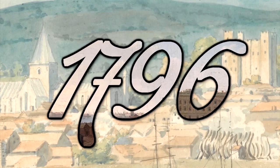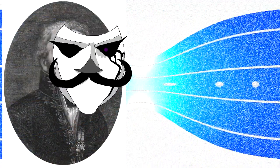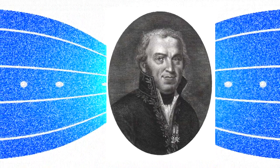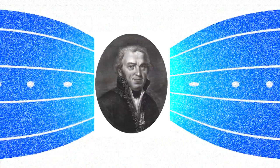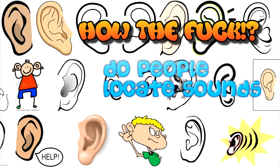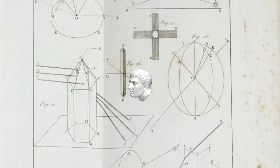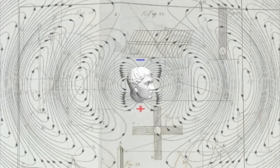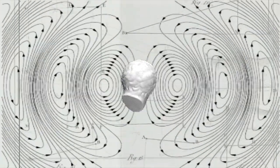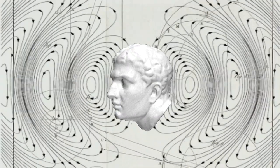In 1796, Italian physicist, savant, and science historian Giovanni Battista Venturi asked the question: how the fuck do people locate sounds with their ears? And with his experiments found the inequality of two impressions which are perceived at the same time by both ears determined the correct direction of the sound.